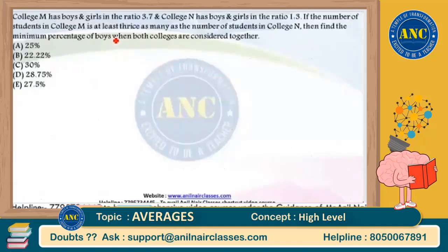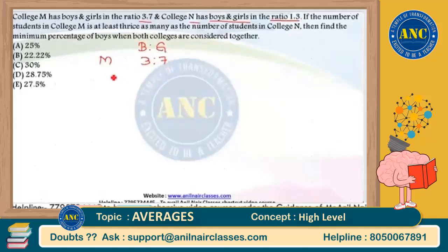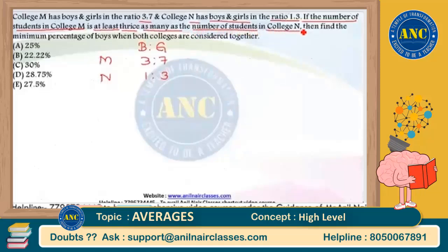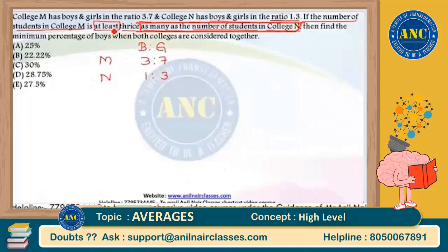The problem: College M has boys and girls in the ratio 3:7, and College N has boys and girls in the ratio 1:3. The number of students in College M is at least three times as many as the number of students in College N. We need to find the minimum percentage of boys when both colleges are considered together.